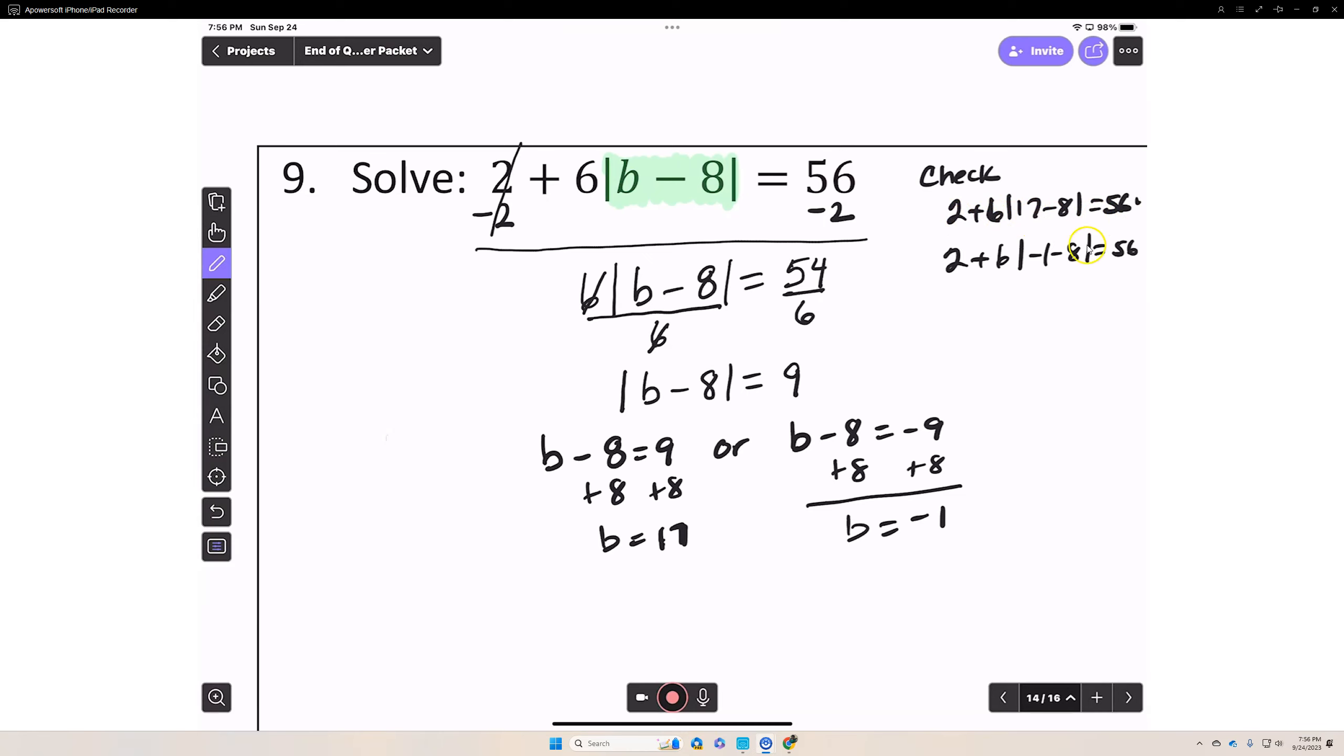The other one is negative 1 minus 8. That gives you negative 9. Absolute value of negative 9 is 9 times 6 is 54, plus 2 is 56.